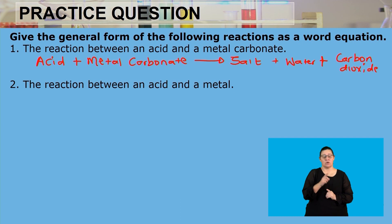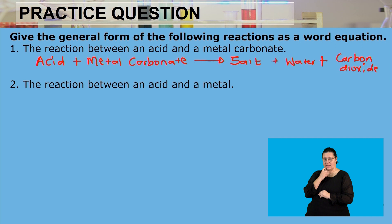Next question: what is the general form of the reaction when an acid reacts with a metal? The acid is going to donate the hydrogen, but the metal doesn't have oxygen or a hydroxide to donate — it's just the metal. So the only thing donated is the hydrogen from the acid.